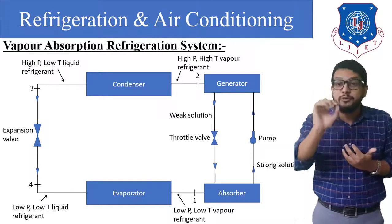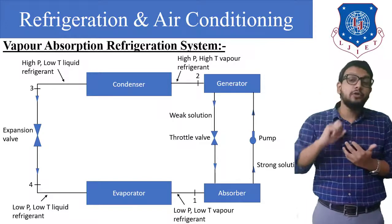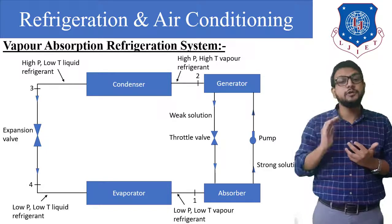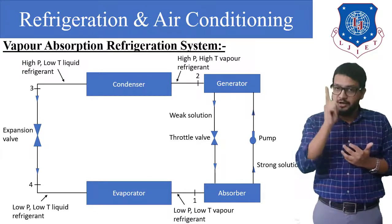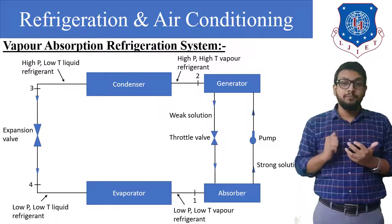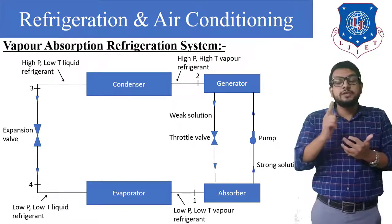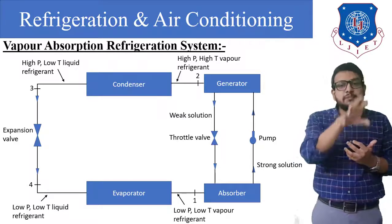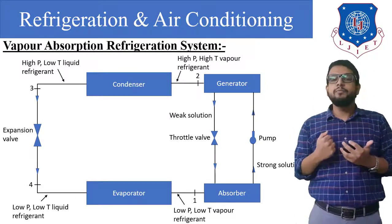At the exit of the generator — point number two — almost 88% vapor ammonia has been released at high pressure and high temperature. It enters the condenser, where heat energy is rejected to the surrounding atmosphere and the ammonia is converted into high pressure, low temperature liquid refrigerant. Remember: in the condenser, temperature is reduced by heat transfer and latent heat is rejected, but pressure remains constant. From point three it enters the expansion device, which reduces the pressure so the evaporator can absorb heat effectively, giving us point four — low pressure, low temperature liquid refrigerant.